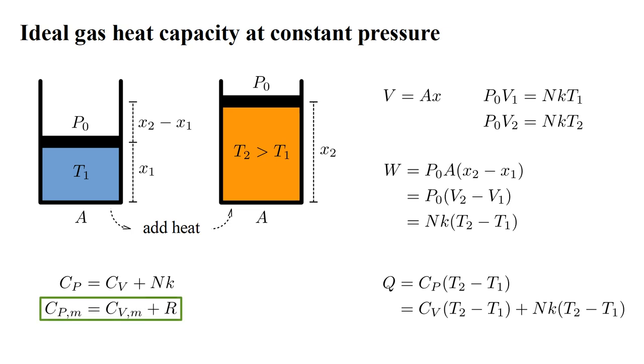Canceling the common factor T2 minus T1, we have C_P equals C_V plus NK. If N is Avogadro's number, then NK is the gas constant R, and the molar heat capacity at constant pressure equals the molar heat capacity at constant volume plus R. For an ideal monatomic gas, the molar heat capacity at constant volume is three-halves R, so the molar heat capacity at constant pressure is five-halves R. For a gas, we need to be clear which form of heat capacity we are dealing with.